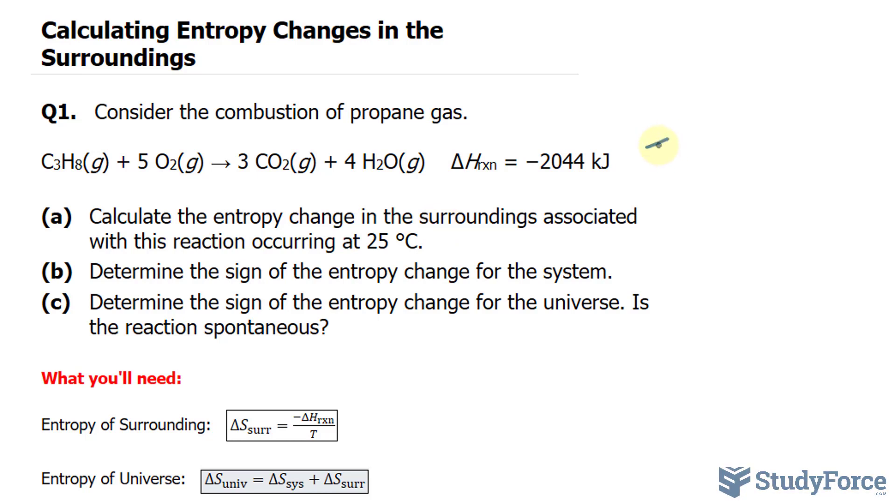And for that, I'll be using the formula 273 plus the temperature in Celsius, which is 25 degrees. 273 plus 25 is 298 K.